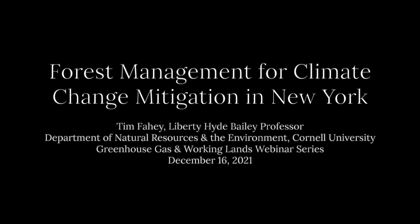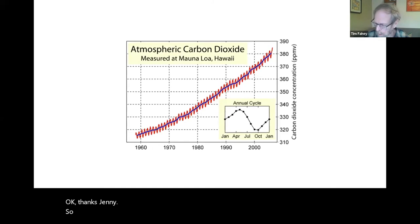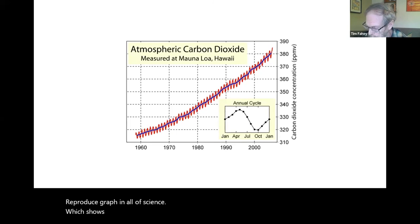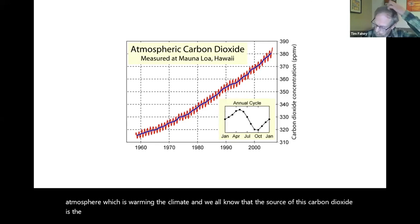This is a production of Cornell University. I put up probably what's familiar to all of you — probably the most reproduced graph in all of science, which shows the inexorable increase in carbon dioxide concentration in the atmosphere, which is warming the climate. We all know that the source of this carbon dioxide is the burning of fossil fuels: coal, oil, and gas.